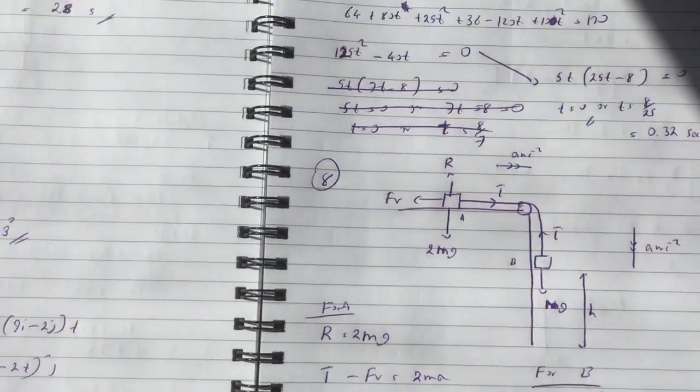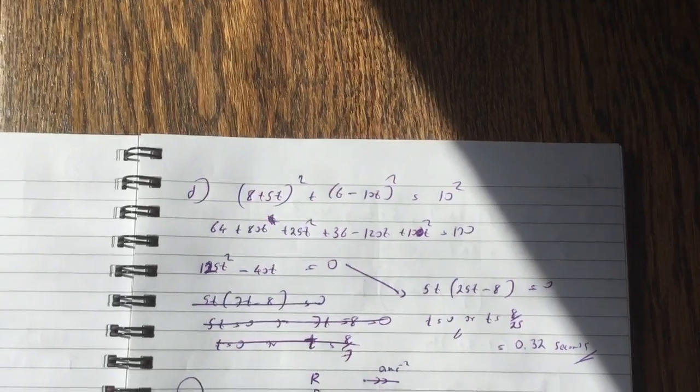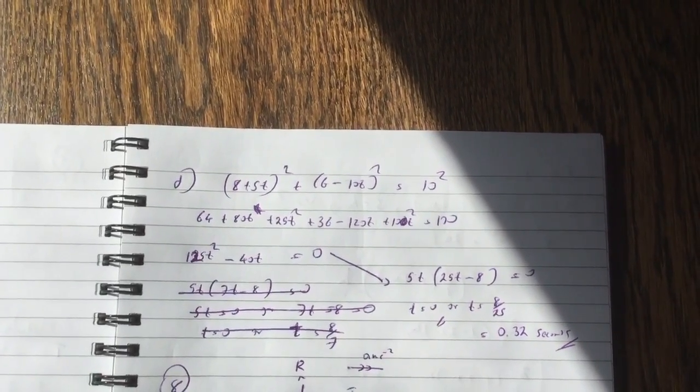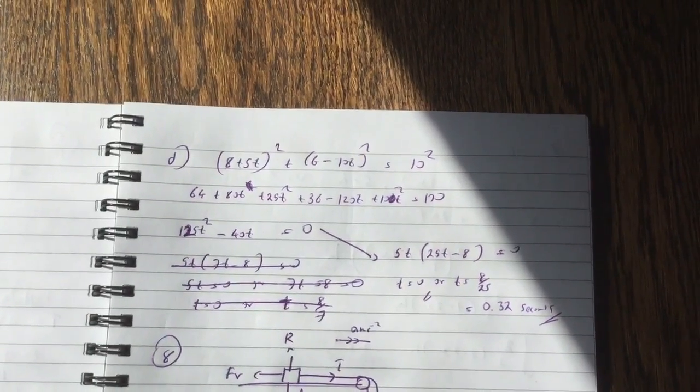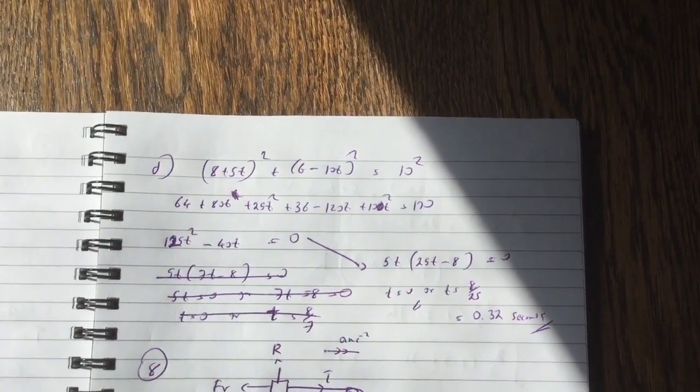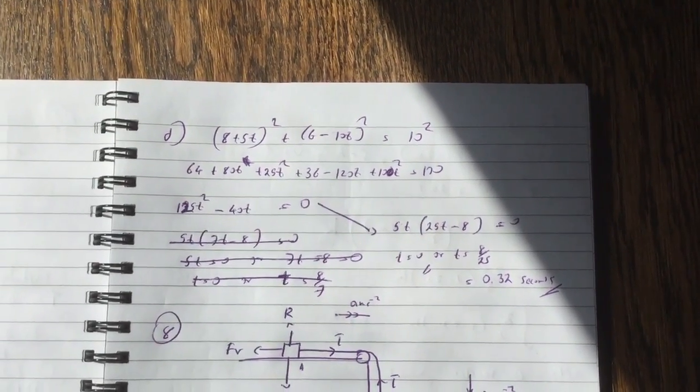And then for part D, all you have to do is just square P minus Q and make it equal to 10 squared. And when you square it you get a quadratic. And when you simplify the quadratic and solve it you get T equals 0 or T equals 0.32 seconds.